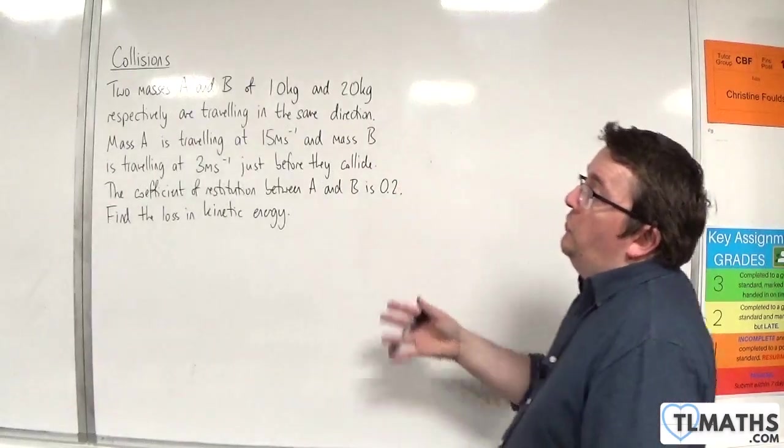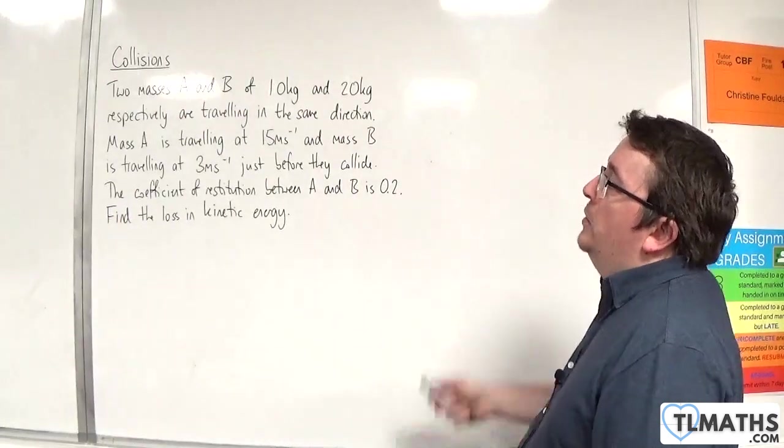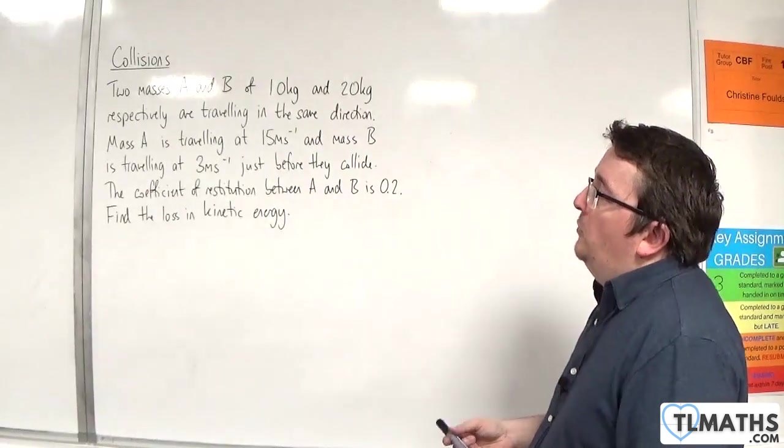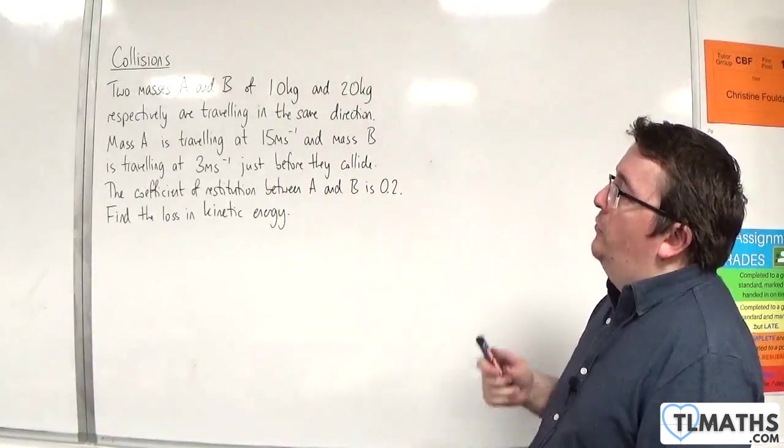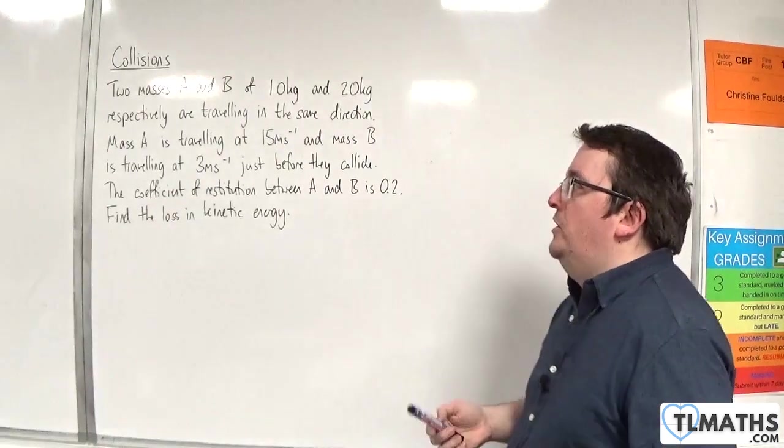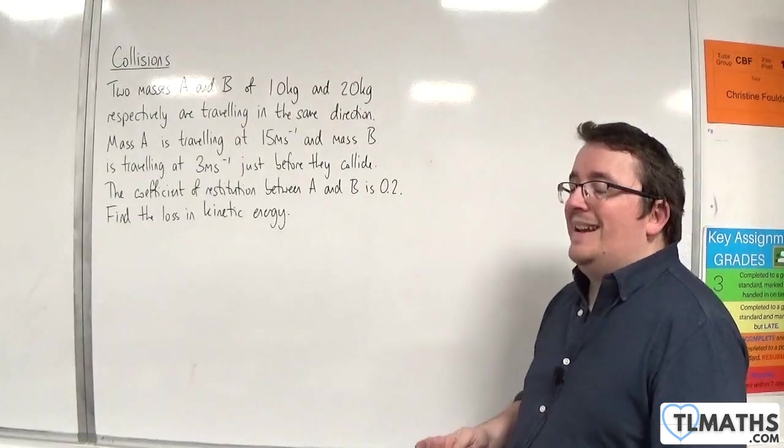So in this example, we have two masses, A and B, of 10 kilos and 20 kilos respectively, traveling in the same direction. Mass A is traveling at 15 meters per second, and mass B is traveling at 3 meters per second, just before they collide. The coefficient of restitution between A and B is 0.2. Find the loss in kinetic energy.